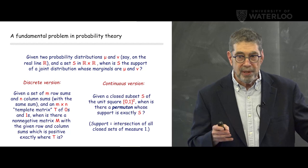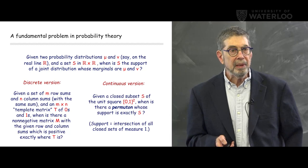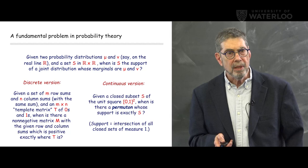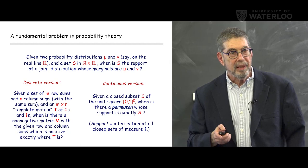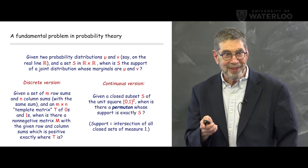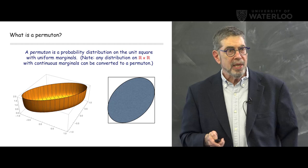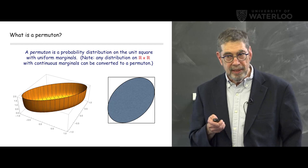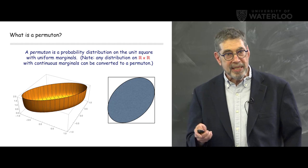Question: can you reduce the discrete case similarly? In a way, yes. What is a permuton? A permuton is literally just a probability distribution on the unit square with uniform marginals — nothing more than the joint distribution of two uniform random variables on [0,1]. It has other names: it's been called a two-dimensional copula or a doubly stochastic distribution. Here's a picture of one that describes random permutations occurring at a certain point in a random sorting network, as proved by Duncan Dauvergne when he was a graduate student at UT.